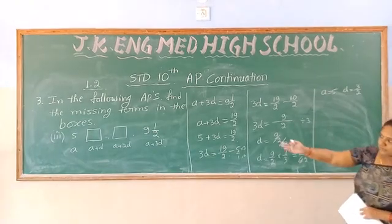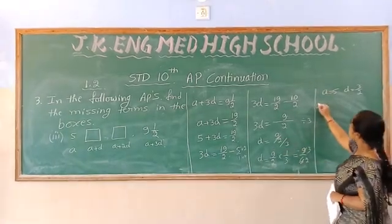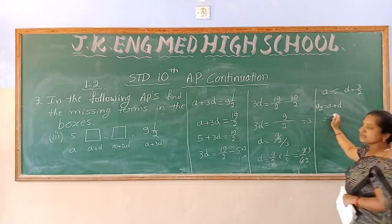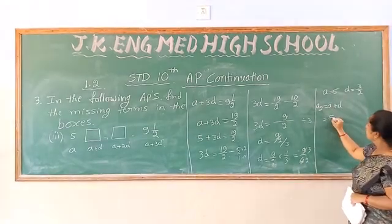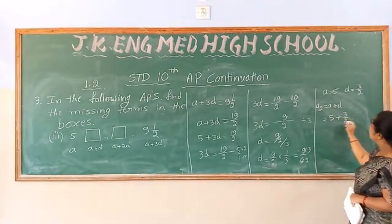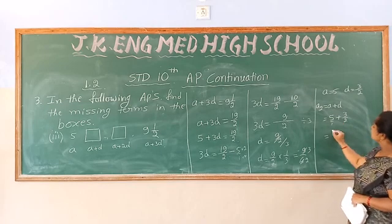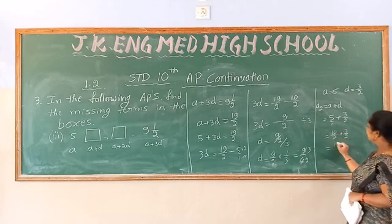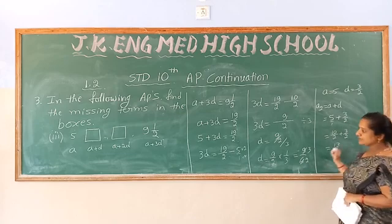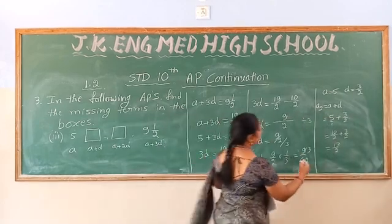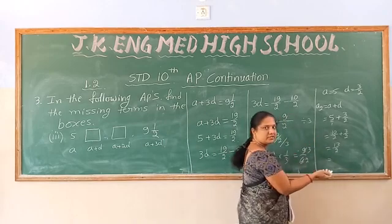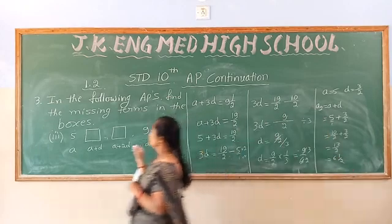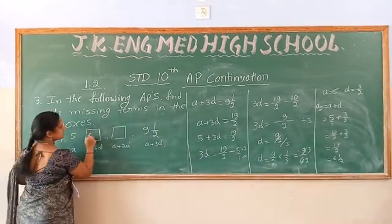Now I know a equals 5 and d equals 3 by 2. The second term is a plus d equals 5 plus 3 by 2. Taking LCM: 10 by 2 plus 3 by 2 equals 13 by 2. Converting to mixed fraction: 2 sixes are 12, remainder 1, so the second term is 6 and a half.